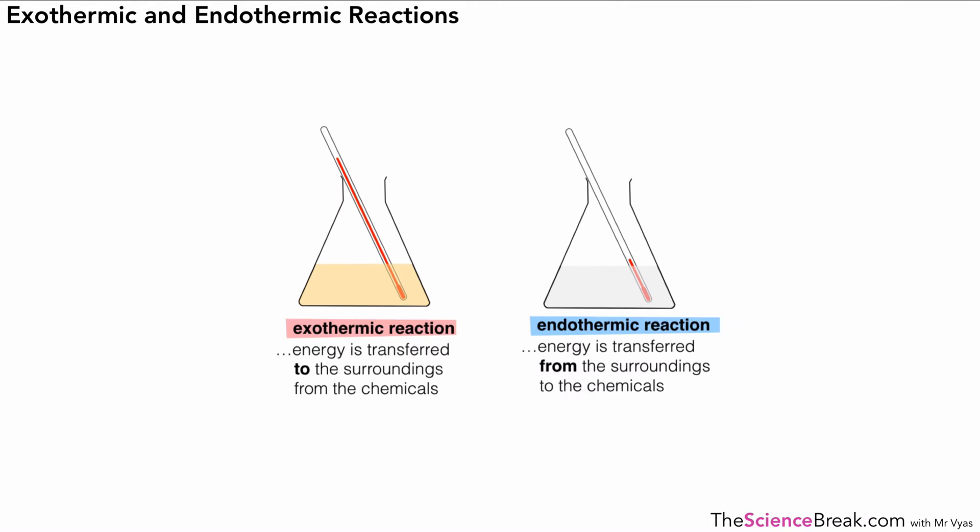However we can now actually move on to look at examples of endothermic and exothermic reactions. So if we start off with our exothermic ones we have three examples that we need to remember. Example number one is quite an obvious one if you think about it. This is combustion reactions.